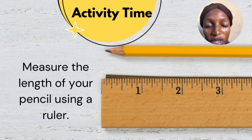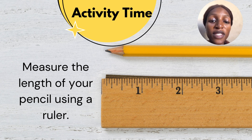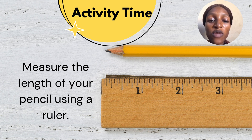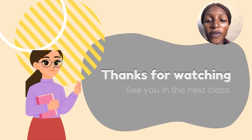Can you see the way the pencil is placed on the ruler? Make sure your ruler starts at zero. Make sure your pencil starts from zero, or if it starts from one, start from there. The number where the eraser end of your pencil lands — that's the length of your pencil. Remember, it is measured in cm.